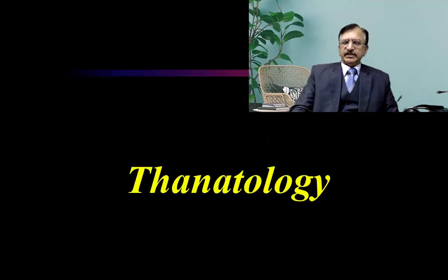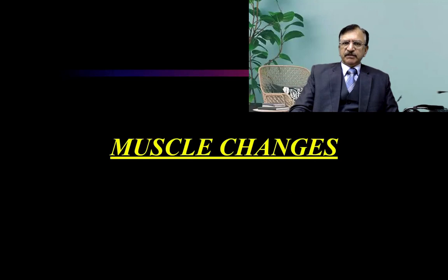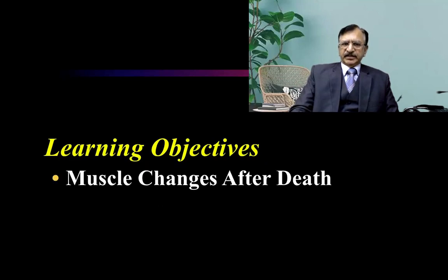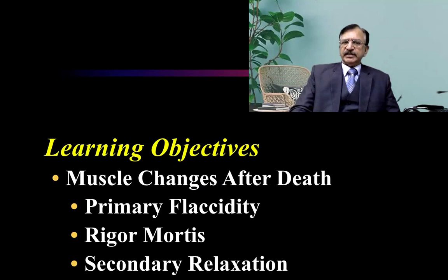As I'm discussing Thanatology from the last few lectures, and in Thanatology we are discussing the early changes. Today I'm starting the changes which appear in muscles after death. The learning objective of today's lecture will be discussing the muscle changes: the primary flaccidity, the rigor mortis, and secondary relaxation or secondary flaccidity.